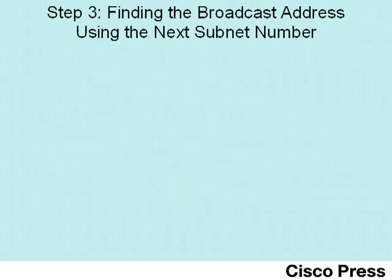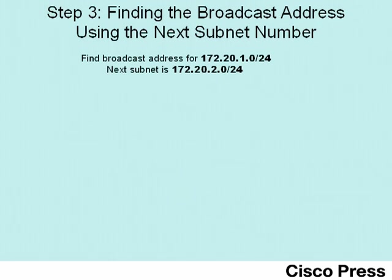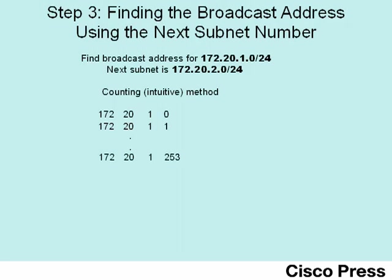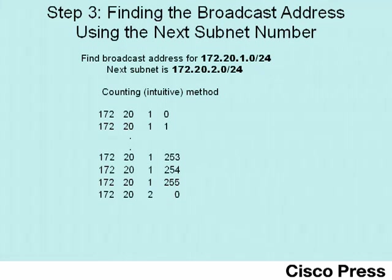To make sure the second method is clear, let's look at subnet 172.20.1.0 with the following subnet being 172.20.2.0. To find the broadcast address for 172.20.1.0, start with the subnet number and count: 172.20.1.1, 1.2, 1.3, continuing up to 172.20.1.253, 1.254, 1.255. Adding one more gives 256, which is out of range, so you write zero and carry a one to get 172.20.2.0 — the next subnet. The number prior to that is 172.20.1.255, which is the broadcast address of the 1.0 subnet.